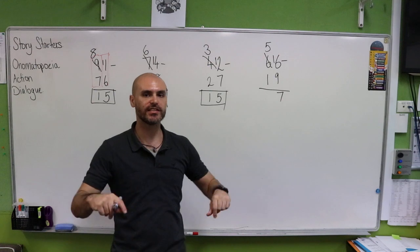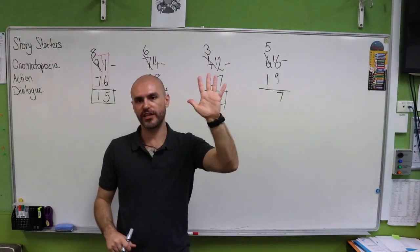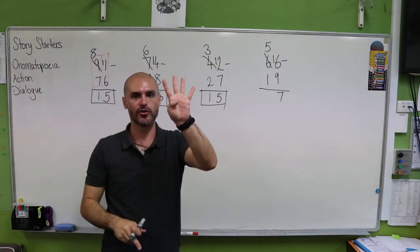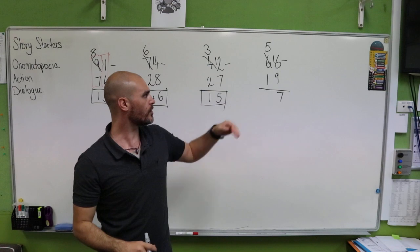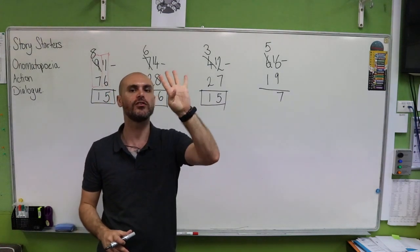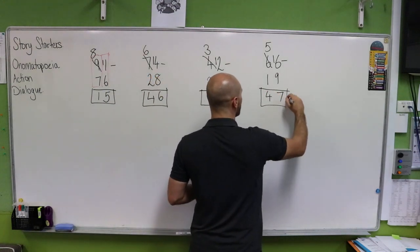Now we have five take away one. We can do this the quick way where we have five and we take one away, which gives us four. If we do it the other way, we're going to count the difference. One, two, three, four, five. And that gives us our final answer of 47.